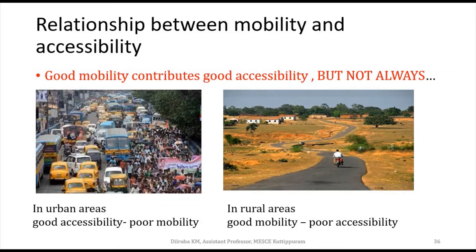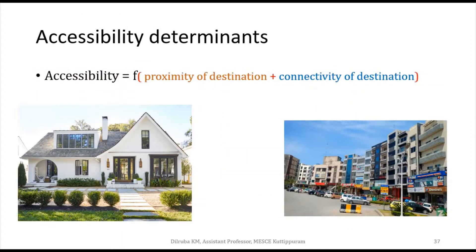Look at the figure. In urban areas, accessibility is very high but mobility is very poor — people face difficulty in moving due to many things happening on the road. Whereas in rural areas, there is a lot of mobility — the road is more than sufficient for the vehicles — but accessibility is very less, and we have to travel long distances to reach our destination.